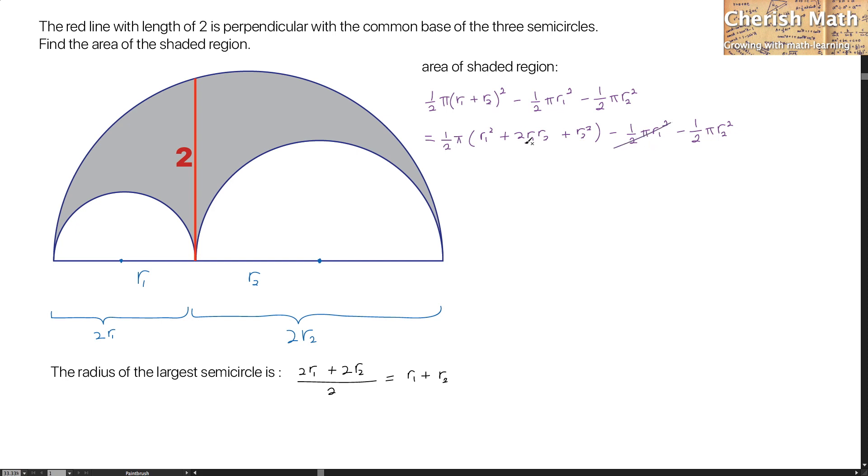Now, what's left here is pi R1 R2 as the area of the shaded region.